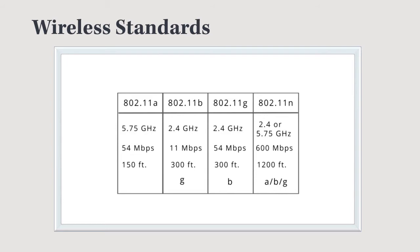These are the wireless standards you'll be responsible for: 802.11a, 802.11b, G, and N, and you'll also need to know about the AC standard — mostly the bandwidth they operate on and the throughput speed. The two that operate solely on the 2.4 GHz bandwidth are B and G, which is why they're compatible with each other. The 802.11b transmits at 11 megabits per second, whereas 802.11g transmits at 54 megabits per second.